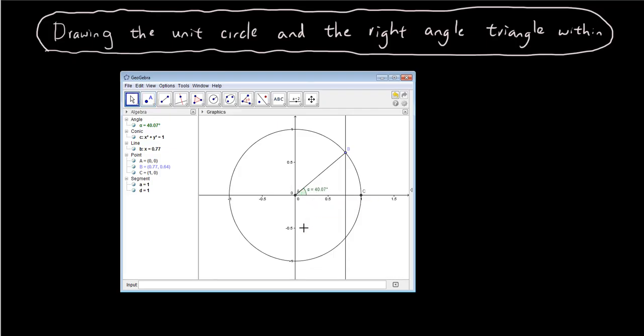Which tells us it's 40.07 degrees. And you can see that as you drag point B around on the screen, the angle adjusts to whatever angle this line is making with the horizontal. And here is our right angle triangle.